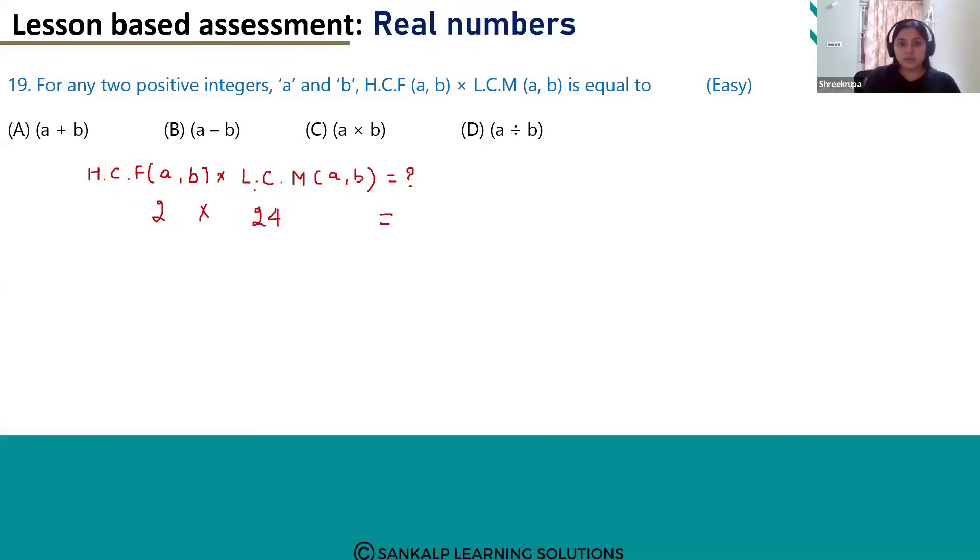So what will we get? 24 times 2 is 48. And if you multiply the numbers, the given numbers that is A and B, we have assumed the values as A is 8 and B is 6. 8 times 6 is 48.